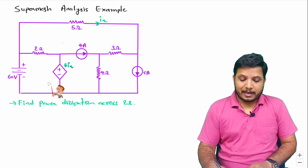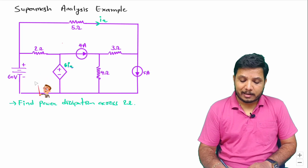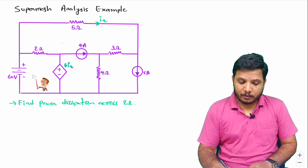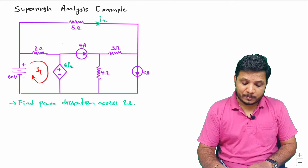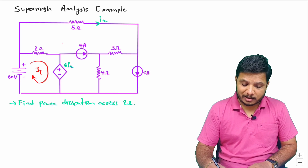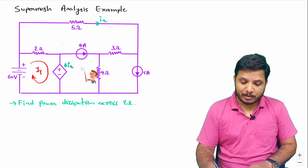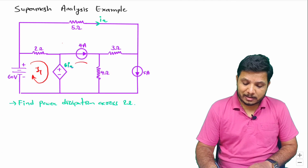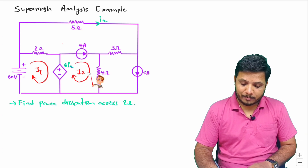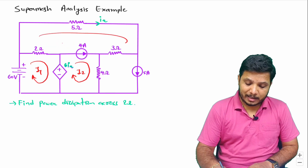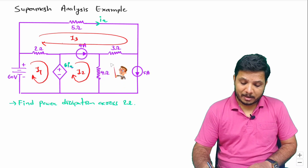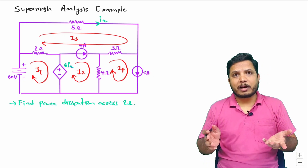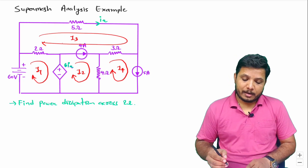By observing this circuit, we can clearly say there will be four different loops. I'll be considering this as loop one first, and all the loops I'll be considering in the clockwise direction only — it will make sure your calculations are simpler. This is the second loop, then loop three, and let me consider this loop as loop four. You can give any number as per your wish.